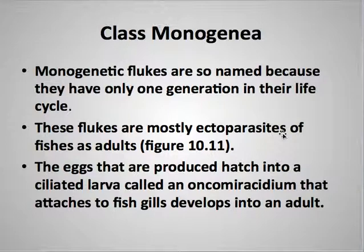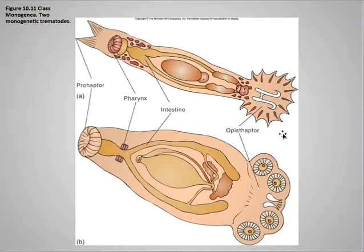The monogeneans — monogenean flukes — have only one generation in their life cycle. They're mostly ectoparasites of fish, and the eggs hatch into a larva specific to this group called the oncomiracidia. These attach to the gills of the fish and develop to an adult there, and then can become parasites of the adult fish. You can see here the adaptations that make them ready to become parasites.